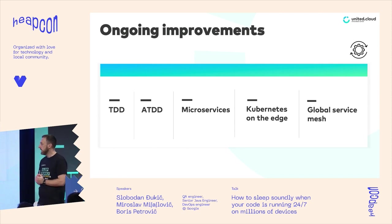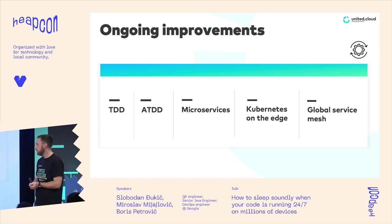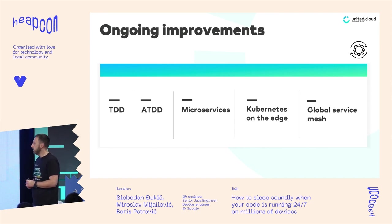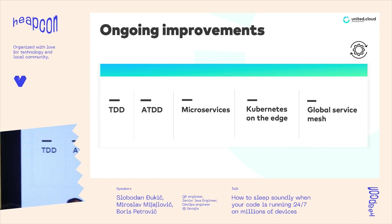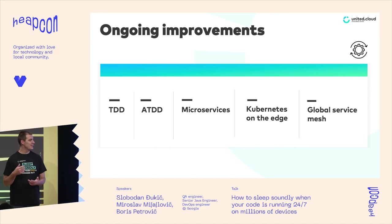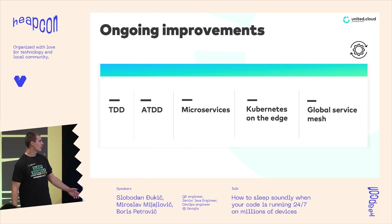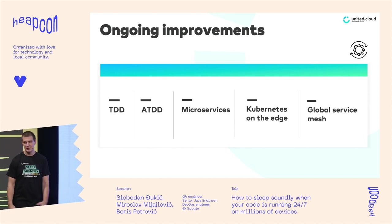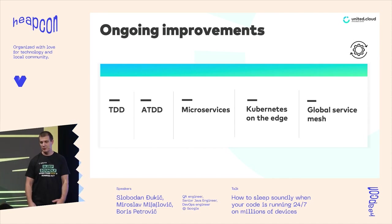Not just on the process side, we started doing improvements on the architectural and infrastructural side by introducing microservices — splitting this monolithic application into microservices. Of course this decreased the impact on production and improved our deploy processes, but as Boris pointed out, it increased impact on their side.